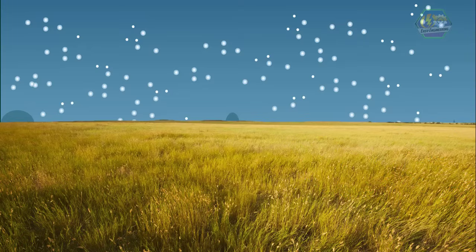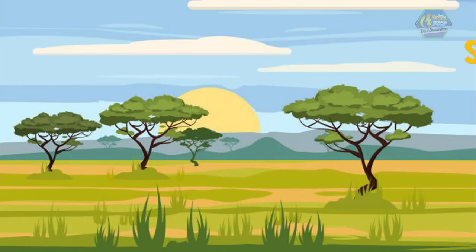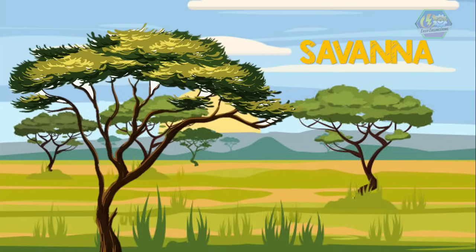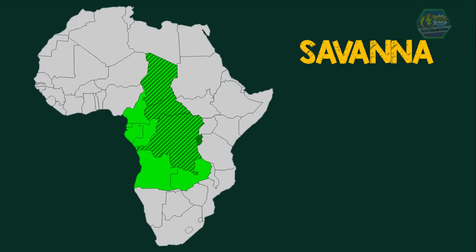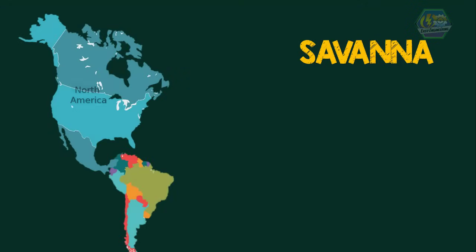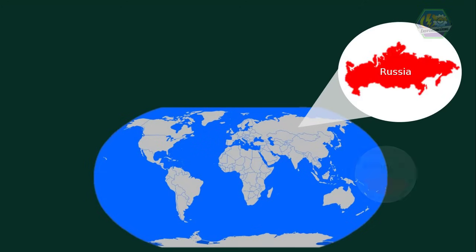Savanna, on the other hand, is a mixed woodland and grassland. Savanna grasslands are found between tropical rainforests and deserts. We can imagine most of Africa for this type of grassland. It is found in areas such as Central Africa, America, and the north and east of South America, like Brazil.